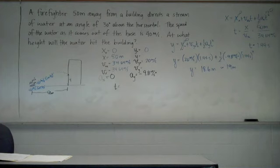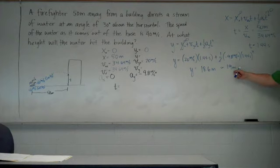So, approximately 19 meters. But that's 19 meters above the hose height. It's not necessarily above the ground. Unless the hose was laying on the ground. Then it would be the ground. So, 19 meters above the hose height is where the water hits. Okay. And, just go ahead and luck.